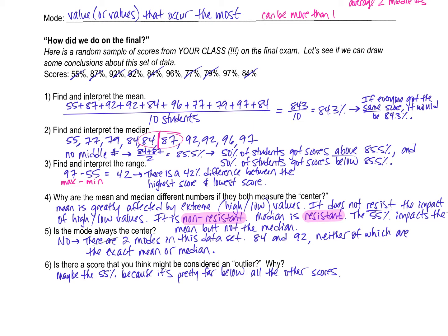The mode could be anything. There could be no modes if everyone got a different score. There could be only one mode, or there could be a bunch of modes if multiple people got the same score. And then the last one, is there a score you think might be considered an outlier? Later in the chapter, we are going to talk about how do you know if something's an outlier or not. There's actually a formula for that to check. But in this case, I'm just guessing the 55 is because it is pretty far below all the other scores.